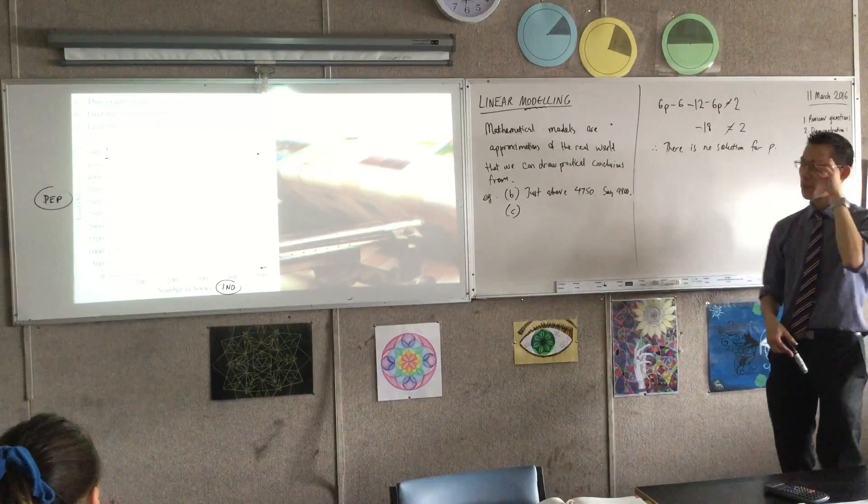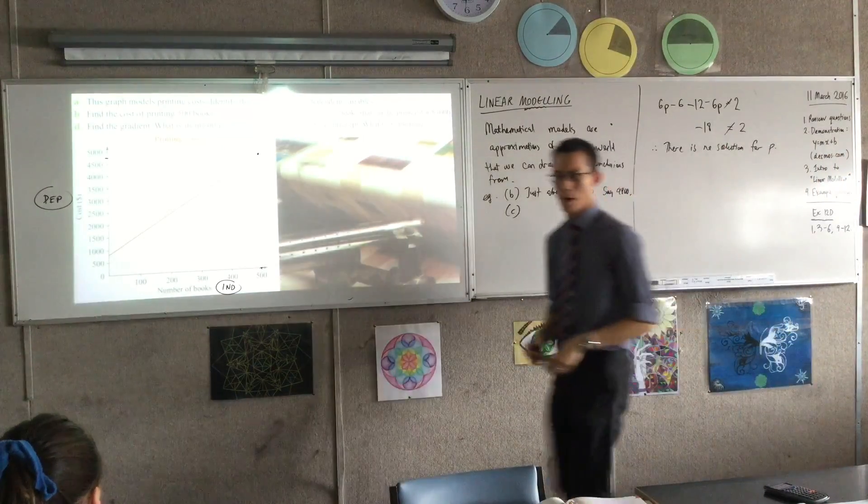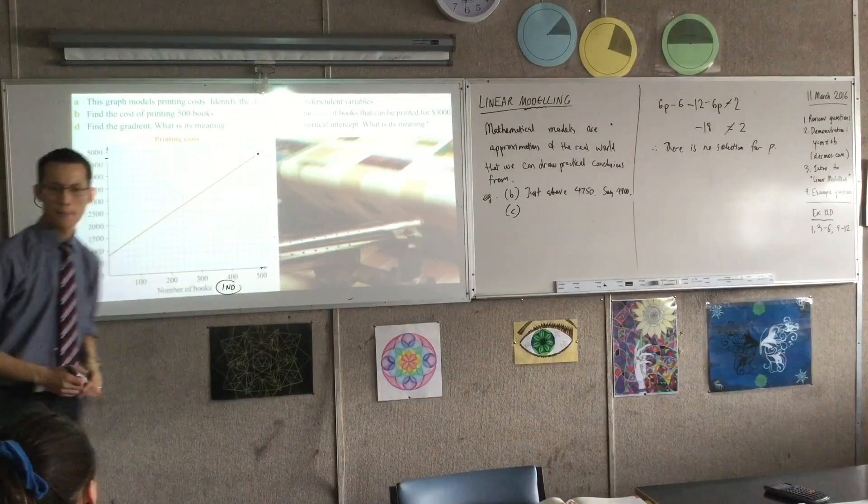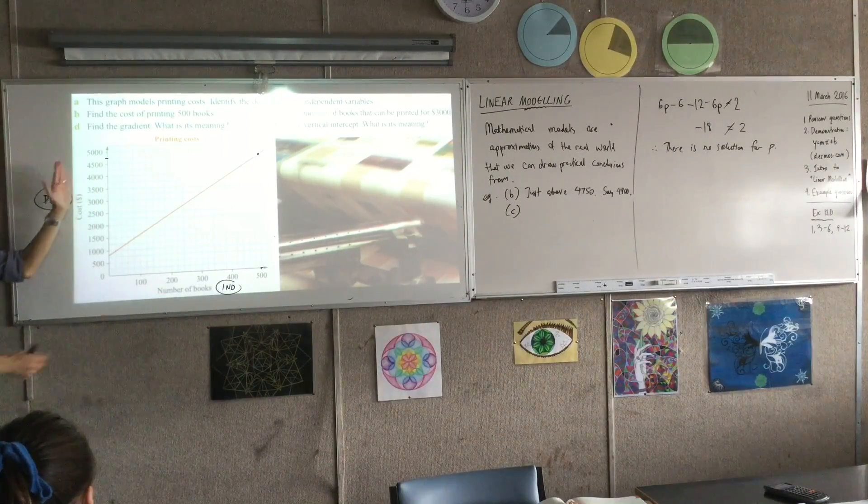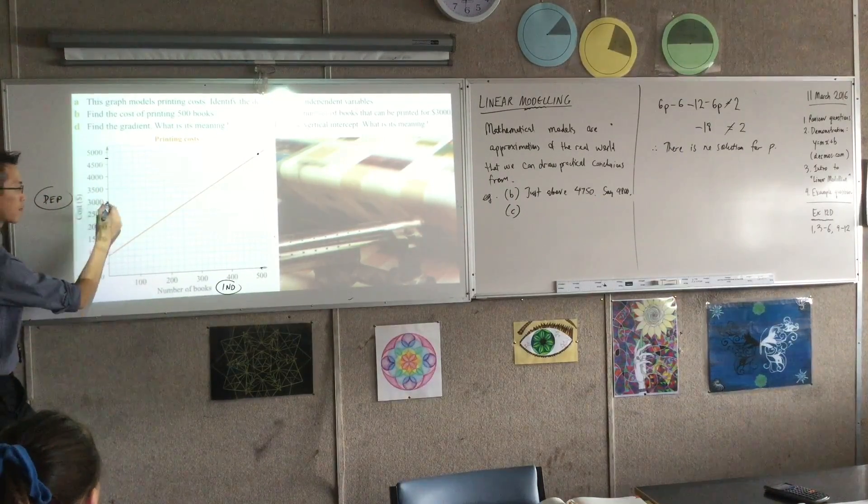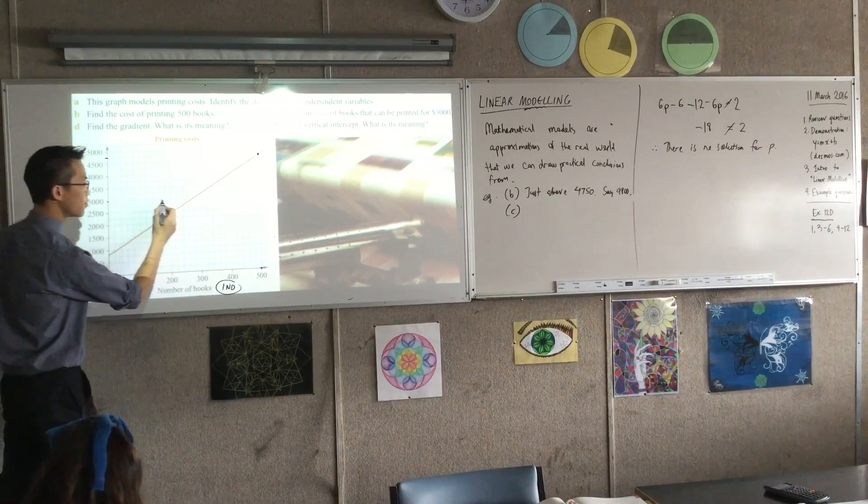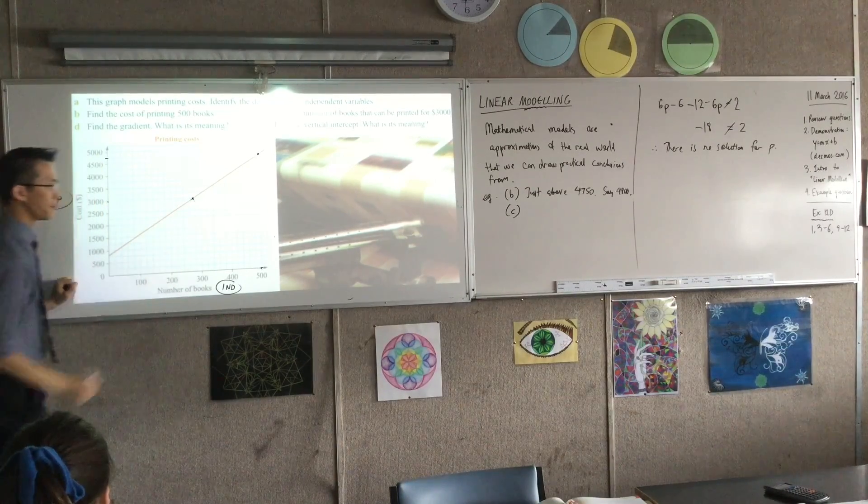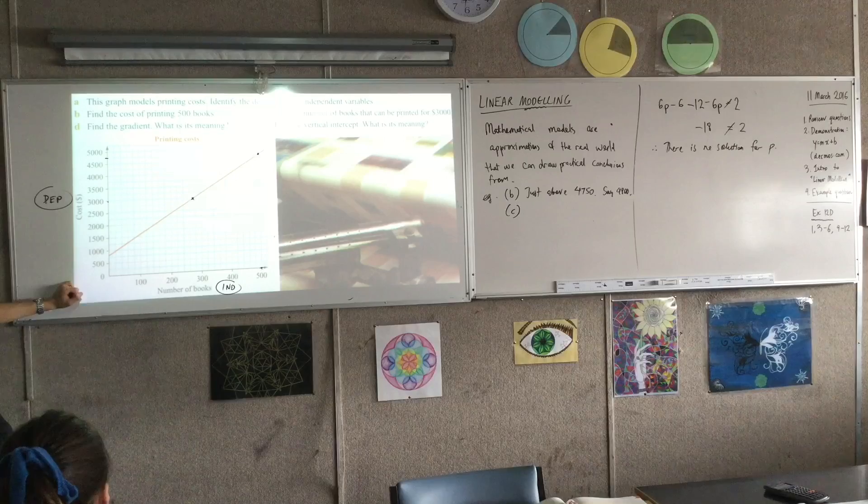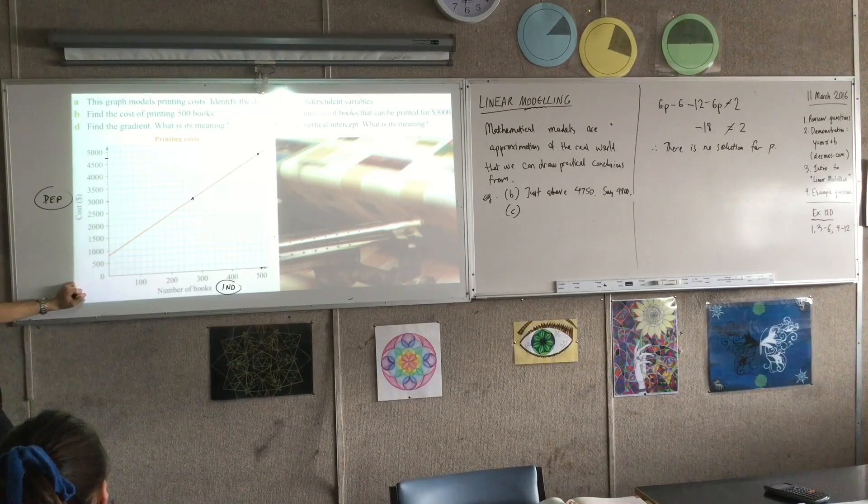Find the number of books that can be printed for $3,000. So now how am I reading? Where am I going to go? Yeah, I'm going to start from my vertical axis. There's $3,000 right there. So that's coming across to... Looks like about there. Did I... yeah, no? $3,000?